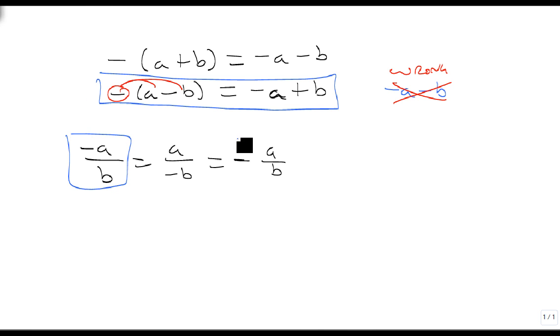This one and this one are preferred forms. We will usually turn a negative on the bottom into one of these.